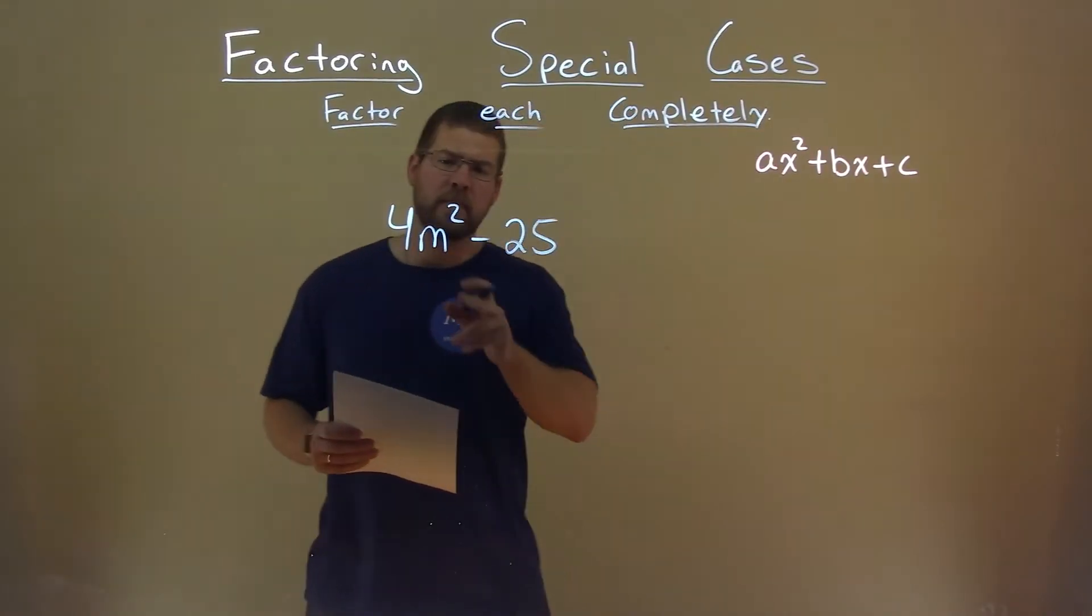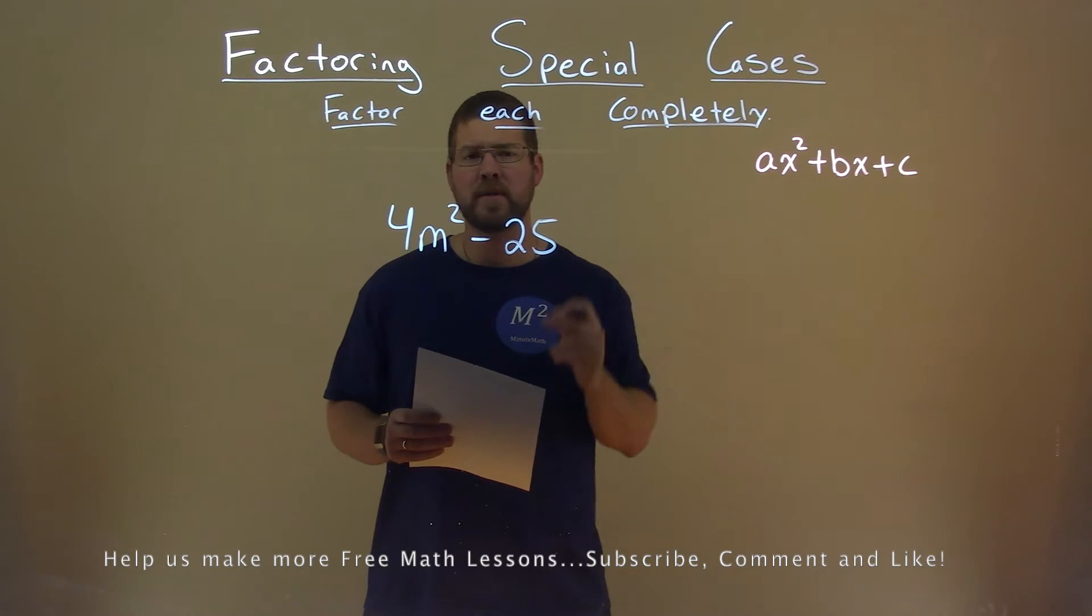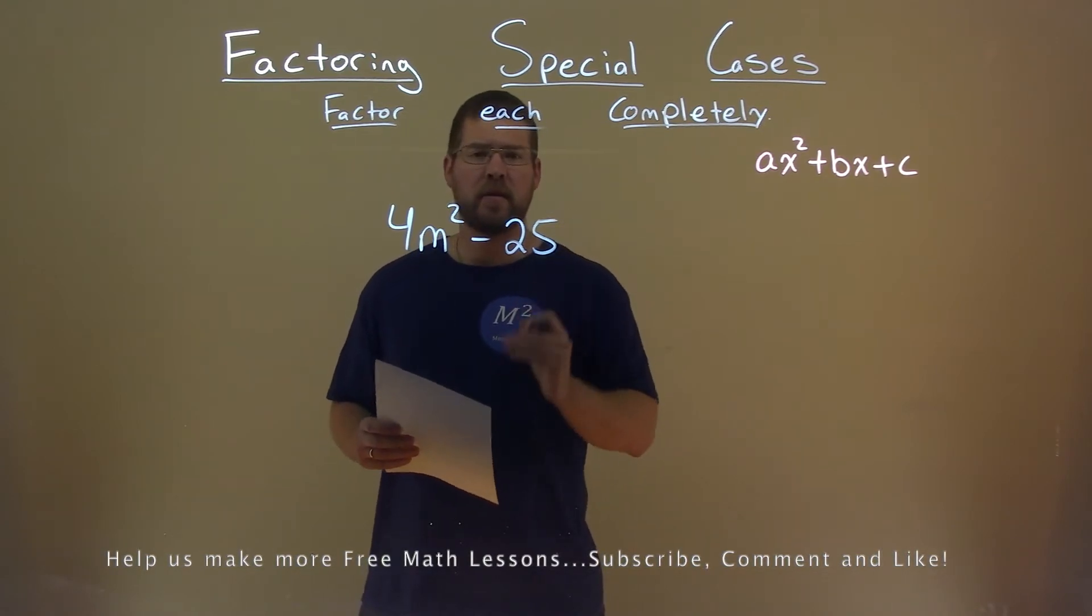We're given this problem right here, 4m squared minus 25, and we need to factor this completely.